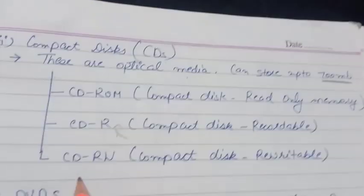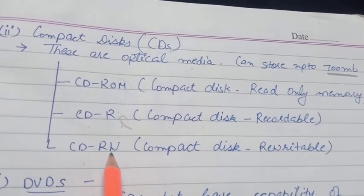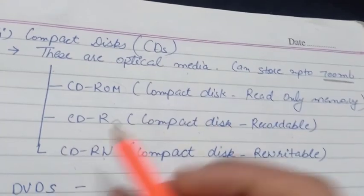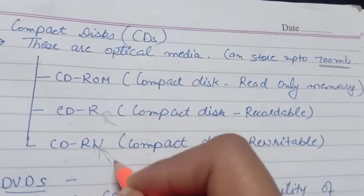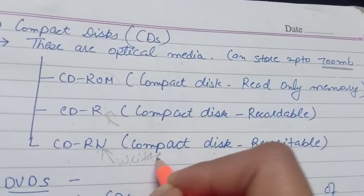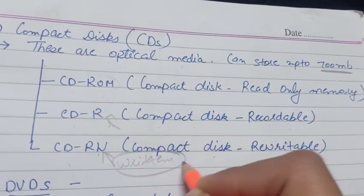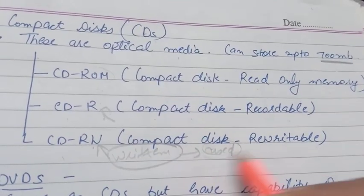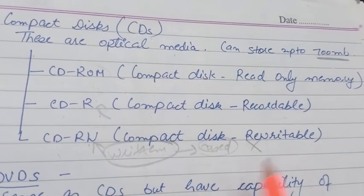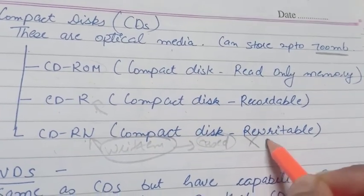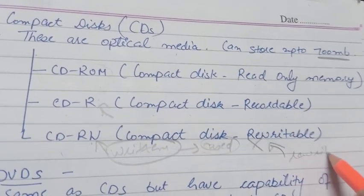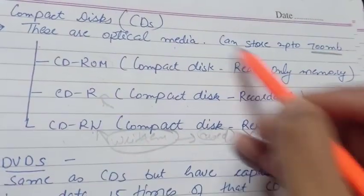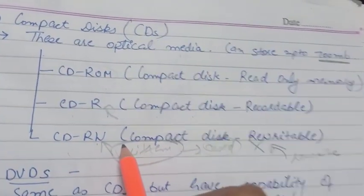The next we have is the CD-RW, that is compact disk rewritable. This means that in this CD, once you have written something and used that particular data, if that data is of no more use, then on this data you can rewrite any data of your choice. So this is the meaning of rewritable. These are the three types of the CD.